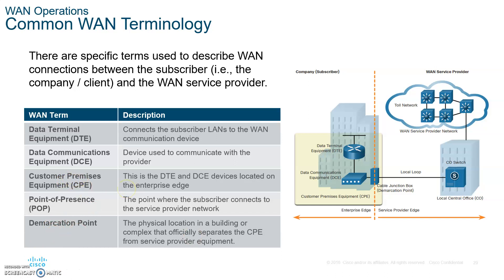Let's talk about DTEs and DCEs. A DTE, or Data Terminal Equipment, is the device at your premises. You also need a DCE device, which sets up your data for transfer over the local loop — sometimes called the last mile — which is the connection between you and the central office.